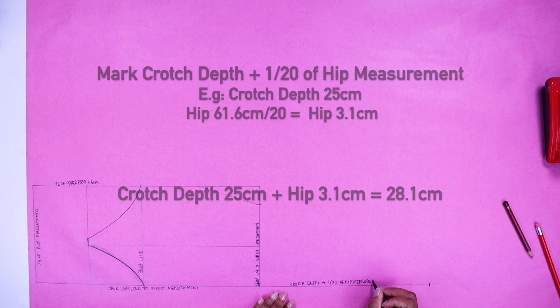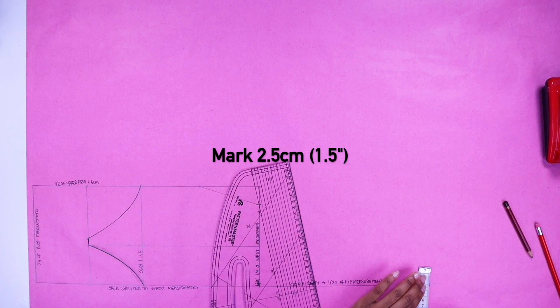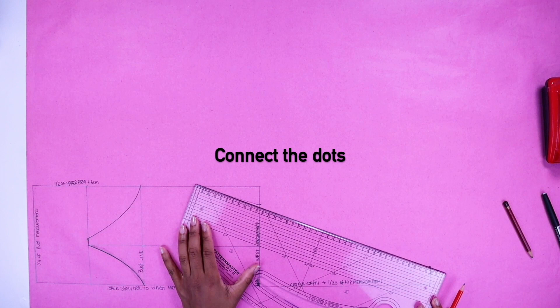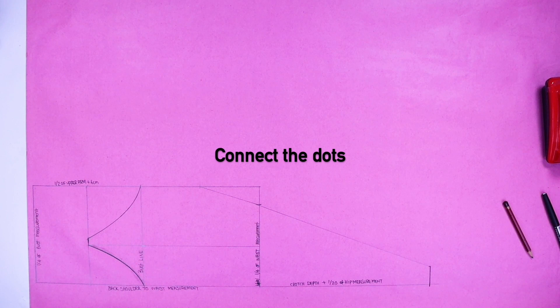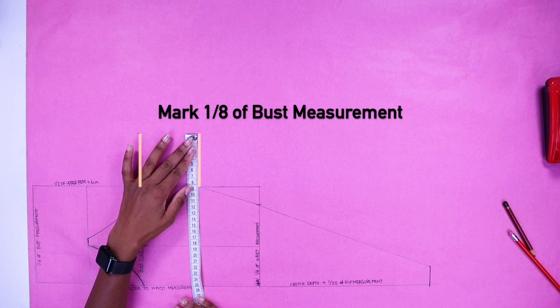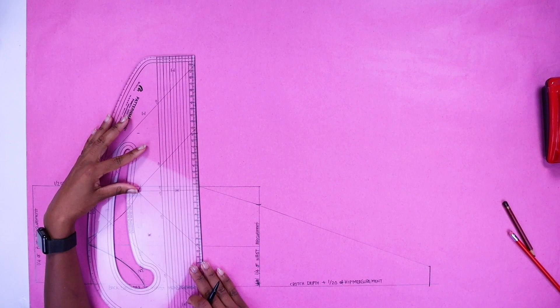Now mark in 2.5 centimeters. Connect the dots. Next we're going to do the side seam. Just do this calculation: your bust measurement divide by 8. Now draw the shapes.